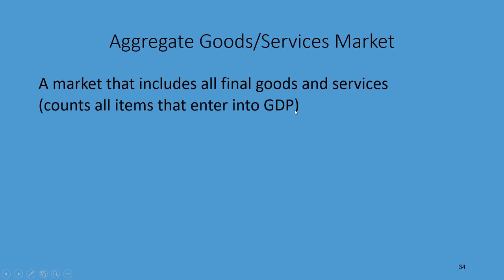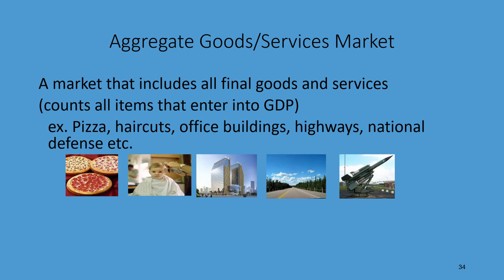This is a market that includes all final goods and services, which means that it counts all items that enter into our calculation for gross domestic product, which hopefully you still remember from Chapter 7. When we went over the goods and services market in Chapter 3, we always focused on one good or service, such as the market for pizza. But here in Chapter 9, when we're talking about the aggregate goods and services market, we're going to be talking about the demand and supply of all things.